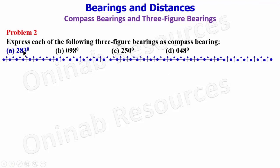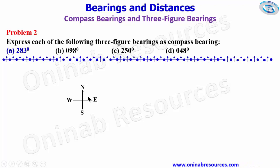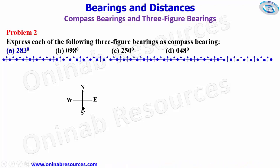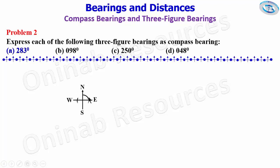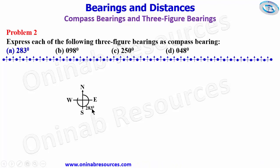We are going to draw a sketch. In our sketch, we have our point. Moving from the north pole: 90 degrees, 180 degrees, 270 degrees — which means it is in the third quadrant. So 270 plus 13 gives 283 degrees. We draw the line.